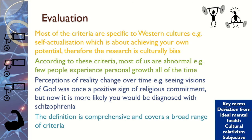Additionally, according to these criteria, most of us would be considered abnormal. For example, we don't all experience personal growth all the time — we're not always achieving or reaching our full potential — and therefore we could be seen as abnormal. This raises the question of whether this criteria is really useful. Furthermore, Jahoda is very unspecific about the number of criteria you need to fail to be considered abnormal, so further clarification is needed in order to fully utilise this definition in an actual medical situation.